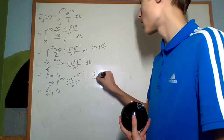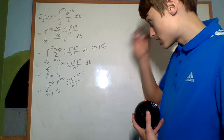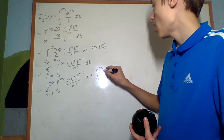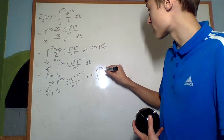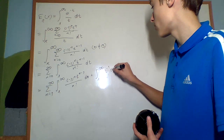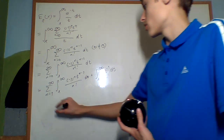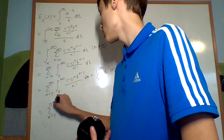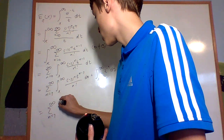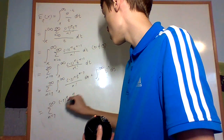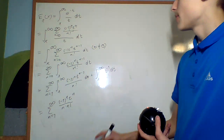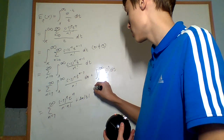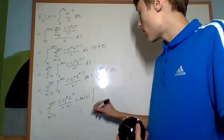Over here, when n is equal to 0, it's going to be the integral of 1/t, or t to the negative 1 dt. So from there, we get the sum from n equals 1 until infinity of negative 1 to the n times t to the n over n times n factorial, plus the natural log of the absolute value of t. And this is evaluated from x until infinity.